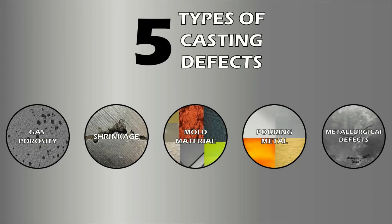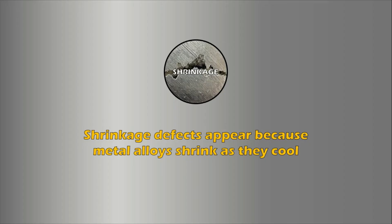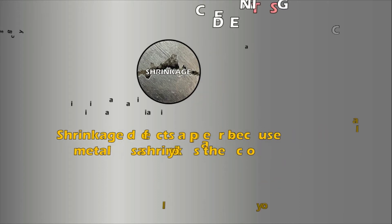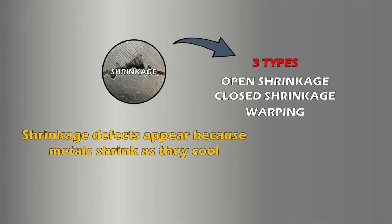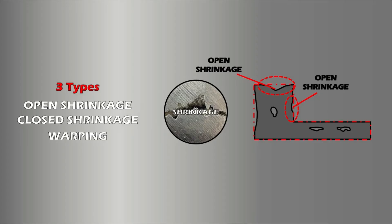Now let's discuss shrinkage defects. Shrinkage defects appear because metal alloys shrink as they cool. It is normal for an alloy piece to shrink as it solidifies; however, defects occur when the metal shrinks unevenly, causing it to either distort the shape of the final product or create interior holes. There are three types: open shrinkage, closed shrinkage, and warping. Open shrinkage shows up on the surface of a cast product either as a dip or a hole, when metal shrinks unevenly and draws air inside the mold.